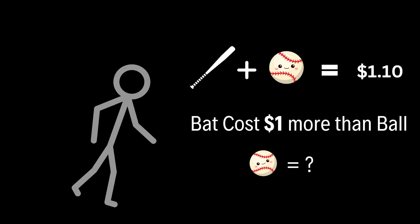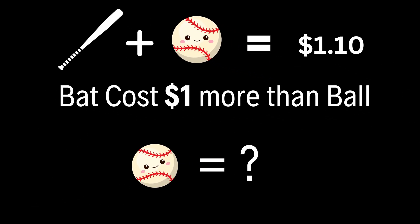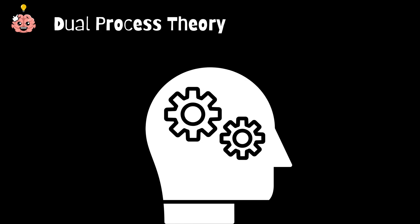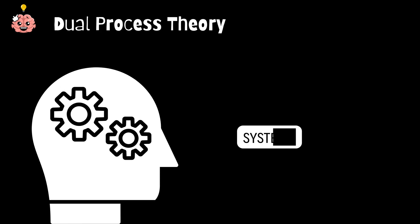Got your answer? Hold on to it. All right, let's dive into something that'll explain this quiz and how our brains can sometimes be a little too quick for their own good. It's called the dual process theory, and it's a way to understand how our brains work in two different modes. Let's call them system one and system two.